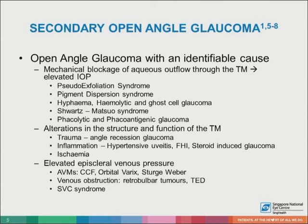Furthermore, open angle glaucoma can develop in cases of elevated episcleral venous pressure, such as in arteriovenous malformations — for example, carotid-cavernous sinus fistula, orbital varices, and Sturge-Weber — venous obstructive scenarios such as thyroid eye disease, or if a patient has a retrobulbar tumor, and in superior vena cava syndrome.